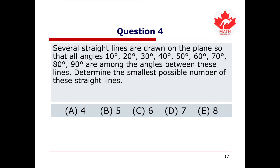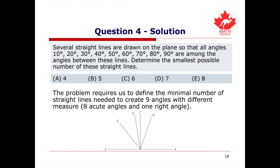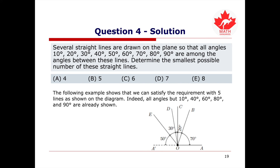Question 4: Several straight lines are drawn on the plane so that all angles 10, 20, 30, 40, 50, 60, 70, 80, and 90 degrees are among the angles between these lines. Determine the smallest possible number of these straight lines. The problem requires us to find the minimal number of straight lines needed to create 9 angles with different measures — 8 acute angles and 1 right angle. The following example shows that we can satisfy the requirement with 5 lines, as shown on the diagram.